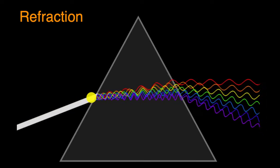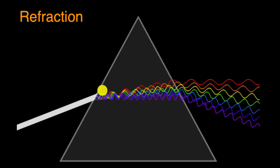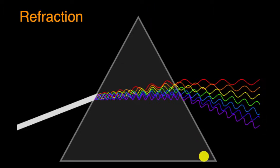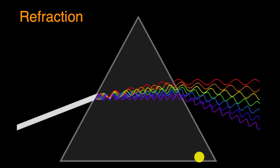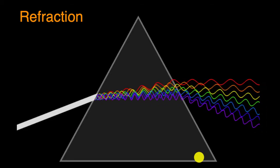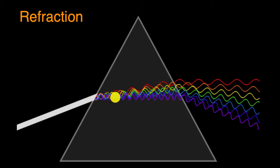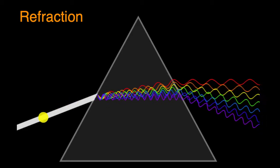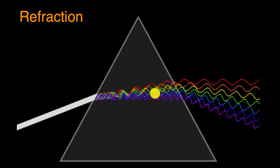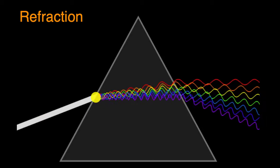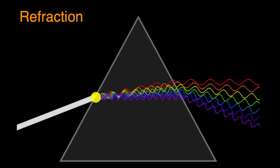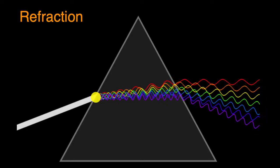But we see something really interesting happening here. When it hits this glass prism, I know it just looks like a gray triangle to you, but imagine it as a triangular piece of glass, and it's hitting it at an angle, what this animation shows us is that the path of the light actually gets bent. And not only does it get bent, but the different frequencies of the light get bent by different amounts.